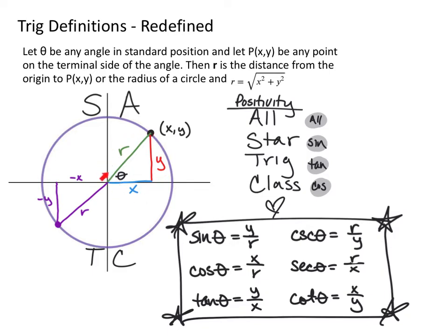This is probably the most important concept. The radius meets the circle at point (x, y): x is the adjacent side, y is the opposite side, and r is the hypotenuse. So sine = y/r, cosine = x/r, and tangent = y/x, whatever the measurements are for that coordinate point on the circle.